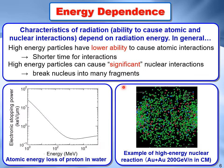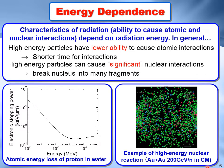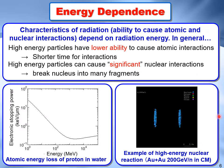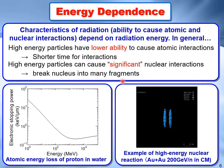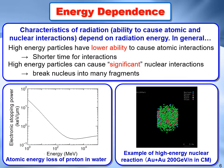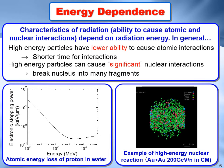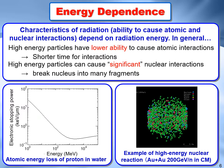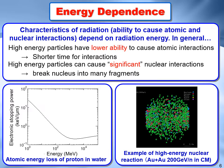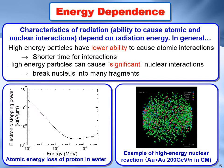This animation shows an example of a high energy nuclear reaction. As you can see, the original nuclei — the gold ions — are completely destroyed by this reaction. This significant nuclear interaction is called a spallation reaction, which cannot be induced by low energy particles.